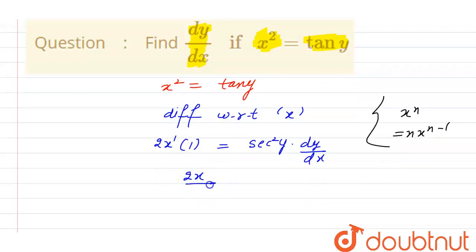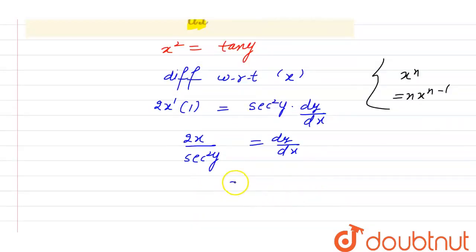This is equal to 2x divided by secant squared y equal to dy divided by dx. We can shift secant squared y to the numerator also.